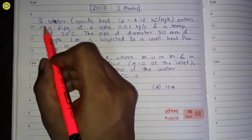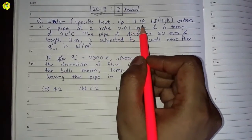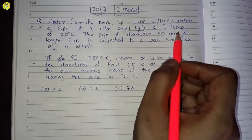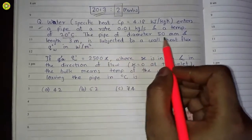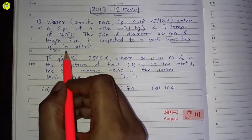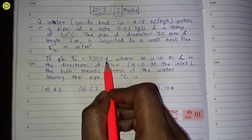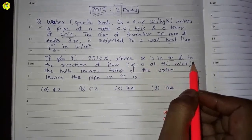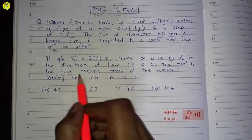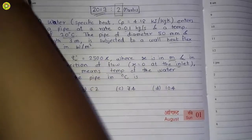Hi friends, welcome. This question is from the 2013 question paper and it was for two marks. The question is: water with specific heat cp equal to 4.18 kilojoule per kg kelvin enters a pipe at a rate of 0.01 kg per second and a temperature of 20 degrees Celsius. The pipe has diameter 50 mm and length 3 meter and is subjected to a wall heat flux q″w in watt per meter square, where q″w equals 2500 times x, x is in meters in the direction of flow, with x equal to 0 at the inlet. The bulk mean temperature of the water leaving the pipe in degrees Celsius is to be found.